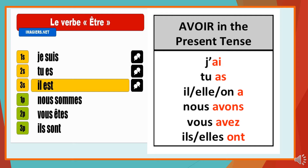The conjugation of être is: je suis, tu es, il est, nous sommes, vous êtes, ils sont. And avoir is: j'ai, tu as, il a, nous avons, vous avez, ils ont. If you are not comfortable with this, please take a notebook, copy it down, and only then proceed with the rest of this video.